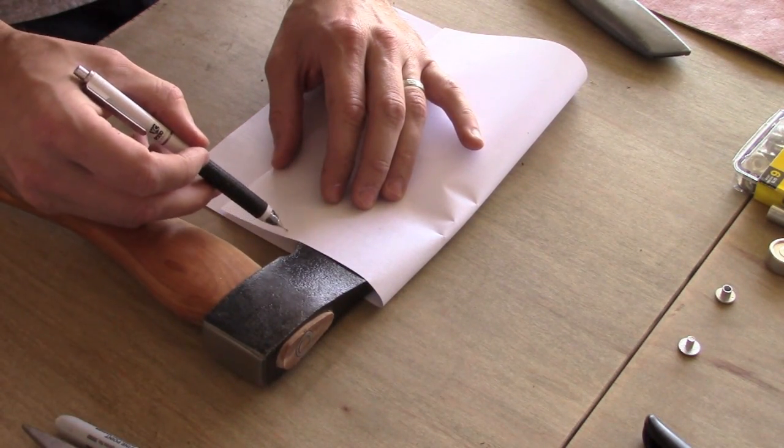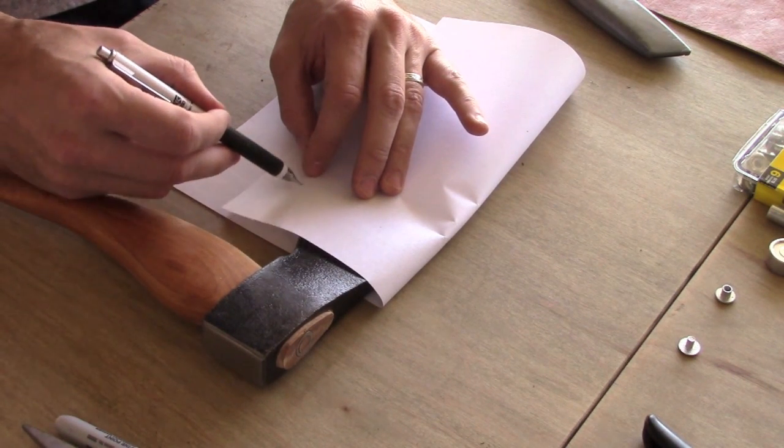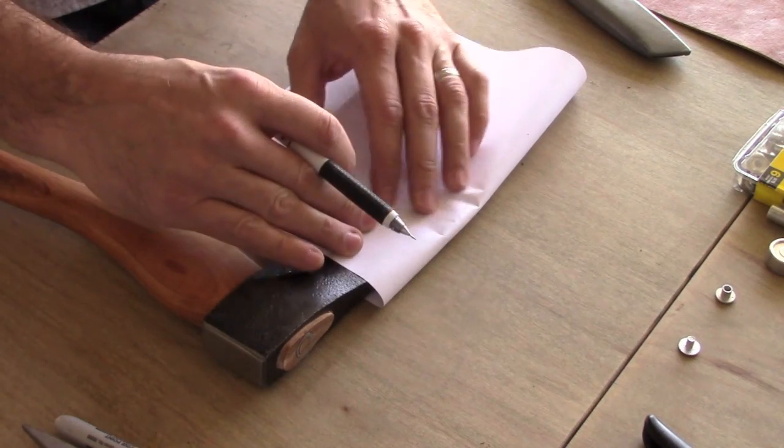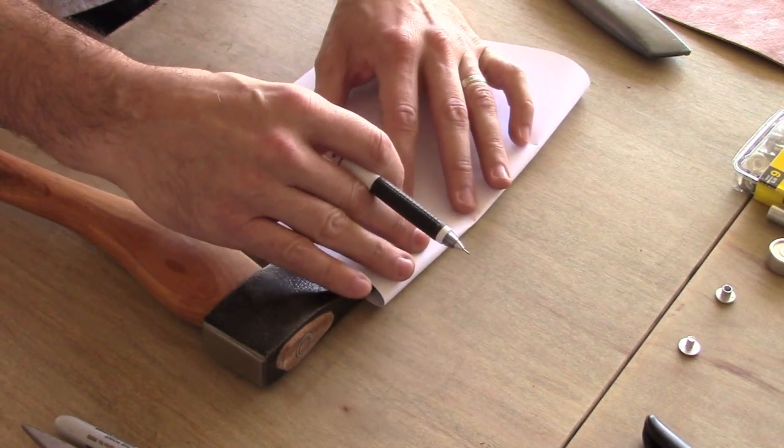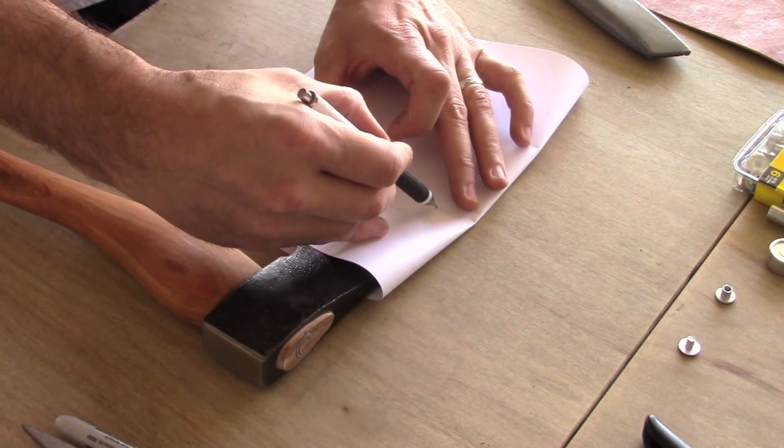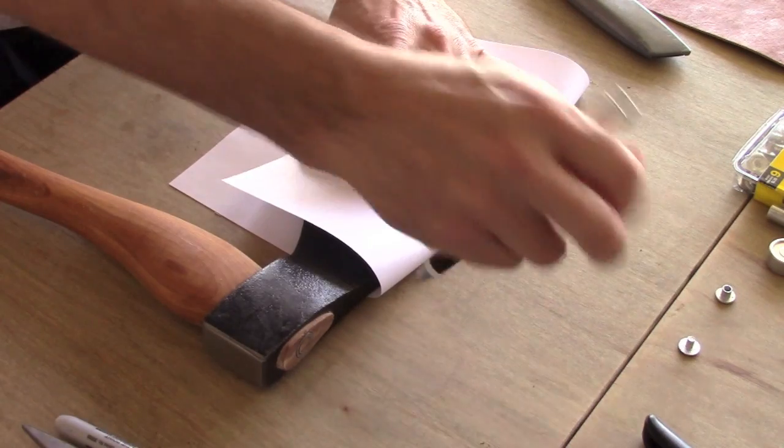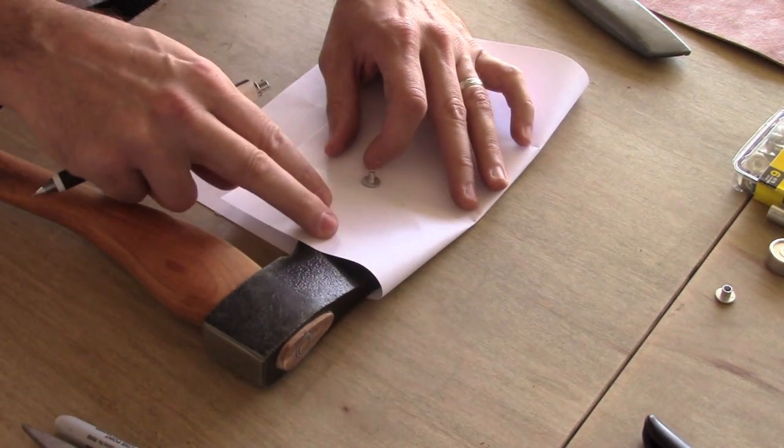This piece I want to cut out right here as it comes along the bottom of the blade. Now my blade edge is right here so I'm going to need a good 3/8 to maybe a half inch to get the Chicago screw in there.